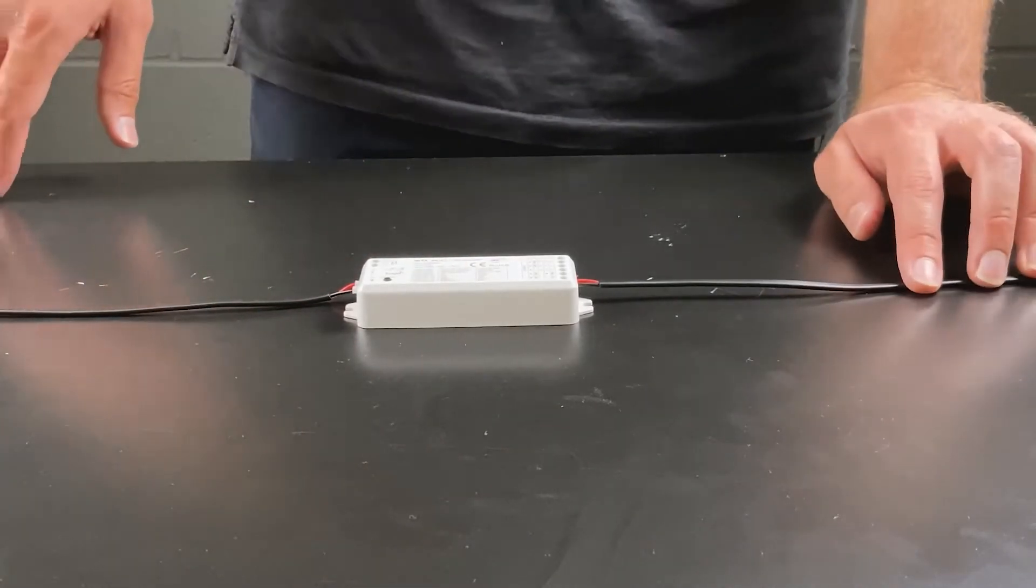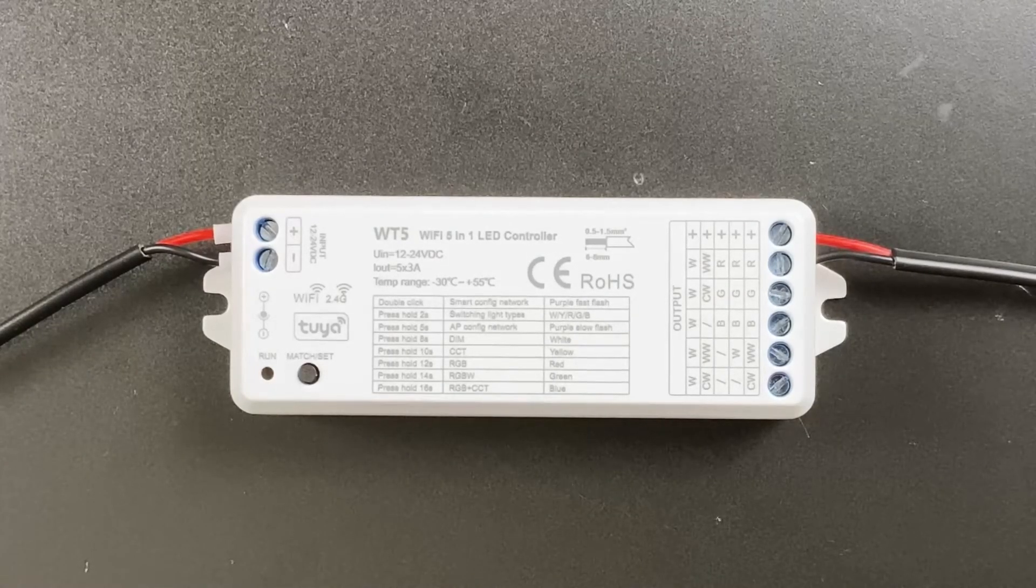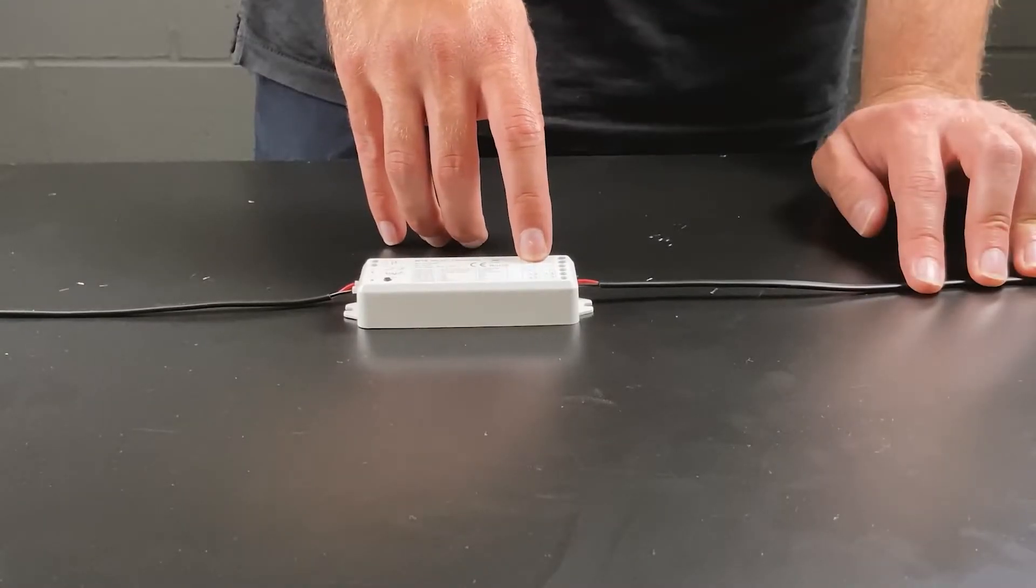For single color tape the red wire will go into the positive terminal and the black wire into any of the other terminals on the WT5.